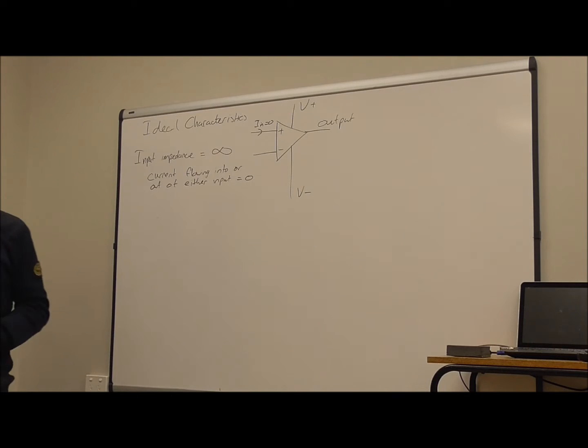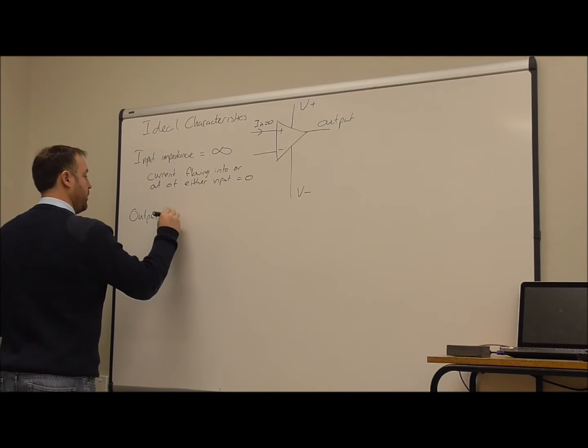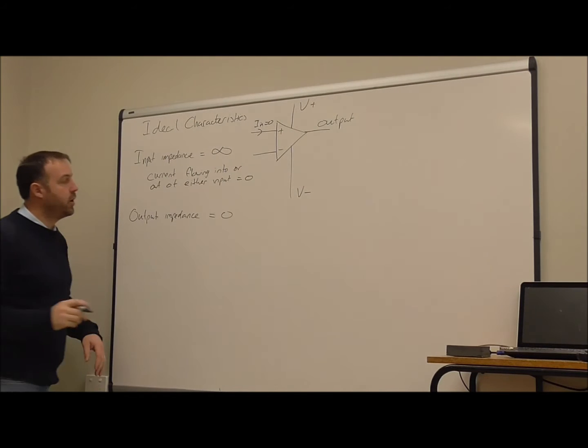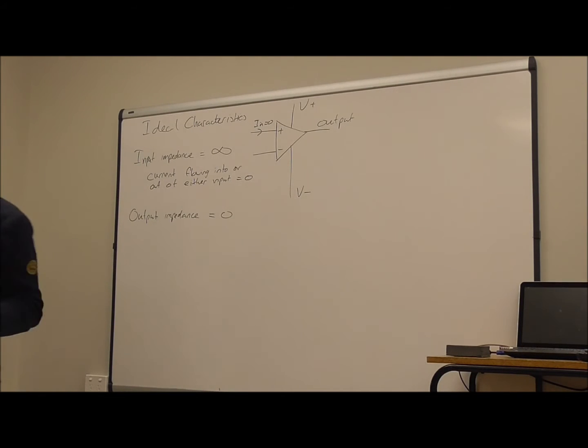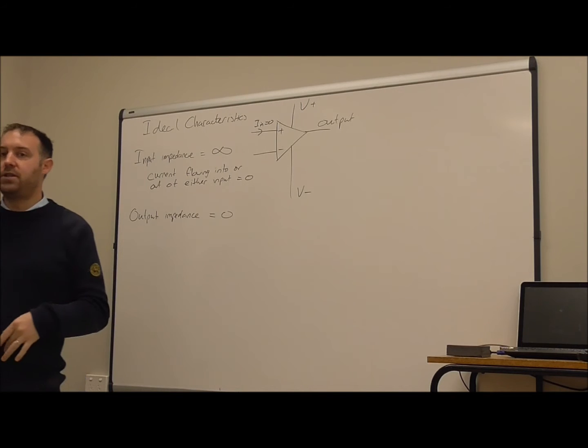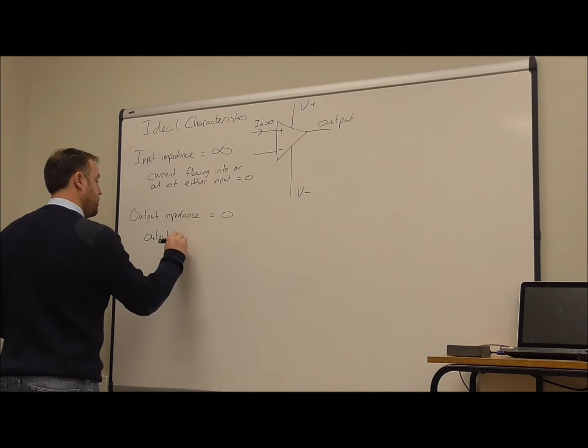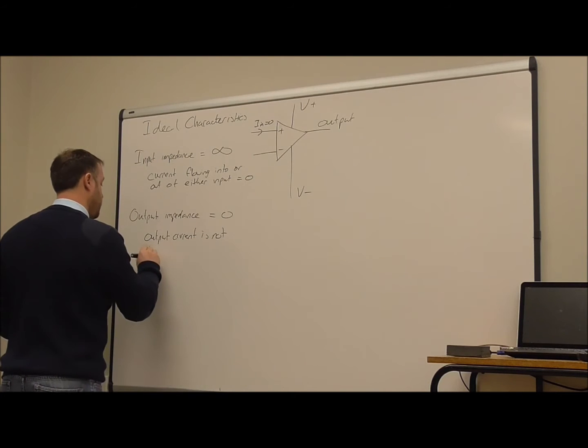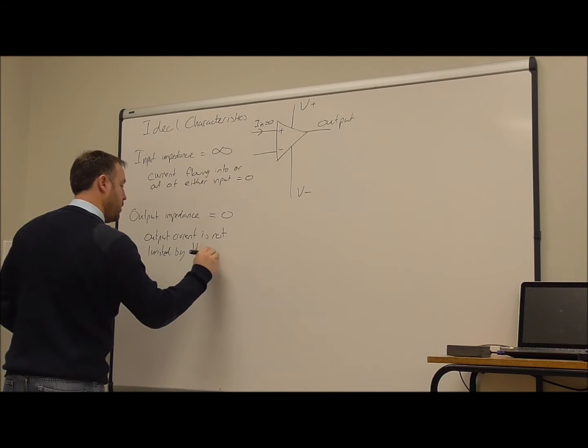Okay, so that's one of the ideal characteristics of an op-amp. Another is that the output impedance is zero. And in the same way that if we have an infinite input impedance, think of impedance as being an opposition to the current flow. If we have an infinite impedance, an infinite opposition to the current flow, we don't get any current. If we have zero opposition to the current flow, it means that it provides as much current as is needed.